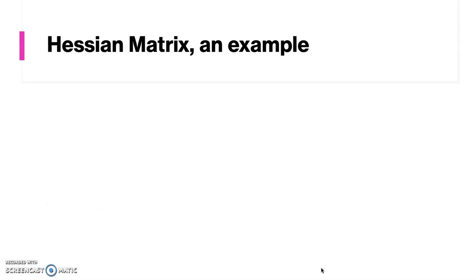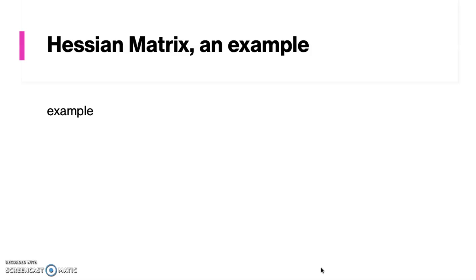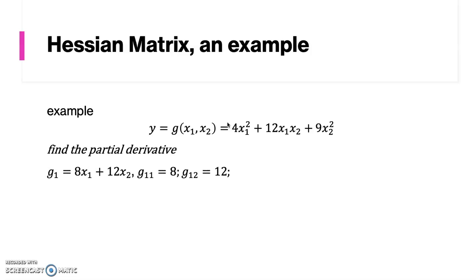To understand more about arranging a Hessian matrix, let's take the following equation as an example and arrange it as a Hessian matrix. First, we take the first derivative with respect to the first variable, so this equation is derived with respect to x1.